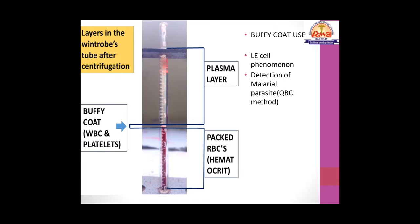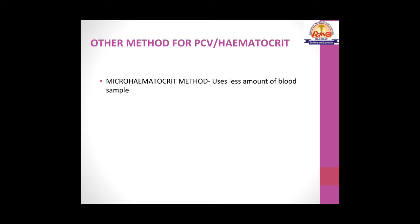Uses of the buffy coat include: (1) the LE (lupus erythematosus) cell phenomenon, used in the diagnosis of SLE; and (2) detection of malaria parasite using the quantitative buffy coat method, where a smear is made from the buffy coat and the RBC column just below it. The micro-hematocrit method for PCV estimation uses capillary tubes, requiring much less blood than the Wintrobe method.